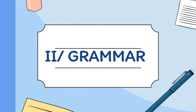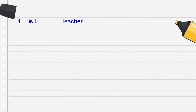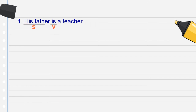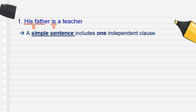The second part of our lesson is grammar. Example one: 'His father is a teacher.' Can you identify the subject and verb? His father is the subject, is is the verb — one subject, one verb, one independent clause. This is called a simple sentence — câu đơn. When you hear simple sentence, you might already be thinking: if there's a simple sentence, there must be a compound sentence too.